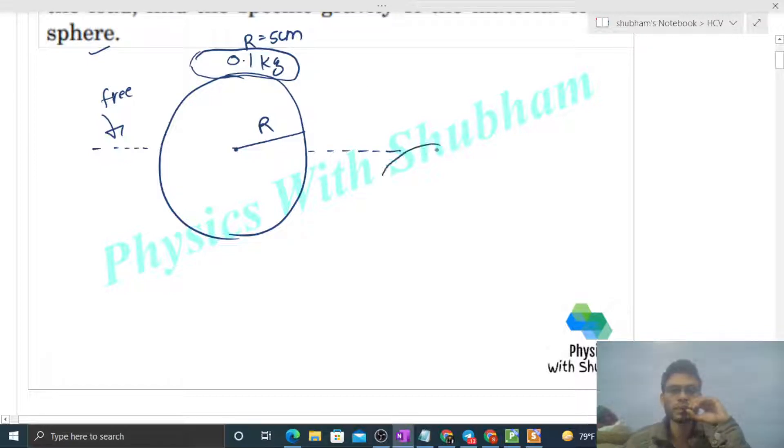So what will happen is that this solid sphere will just submerge in water in such a way that the sphere is just submerged in water, so that this load will not get wet. Because this is the maximum load that we can put without wetting the load.